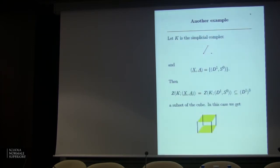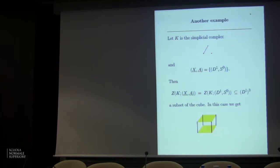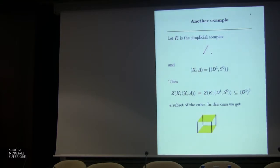For another example, take the simplicial complex on three vertices with one edge and a disjoint vertex, and let all X_i = D1 and all A_i = S0. The polyhedral product is a subspace of the cube D1 cross D1 cross D1 — it's a four-poster bed shape. This space has lots of homotopy theory. These spaces have been studied for a long time in homotopy theory but weren't recognized in the form I'm presenting them now.